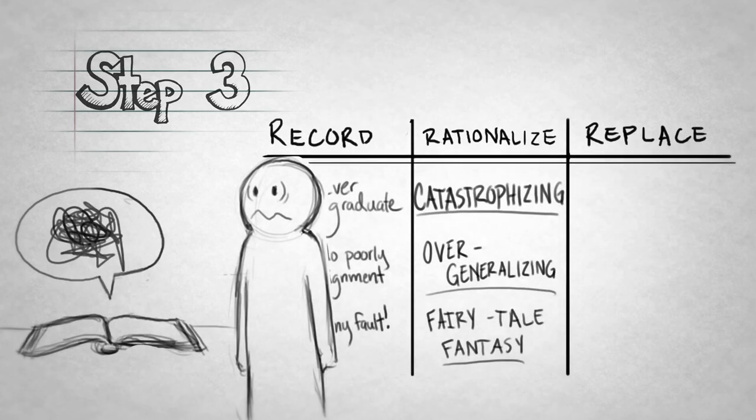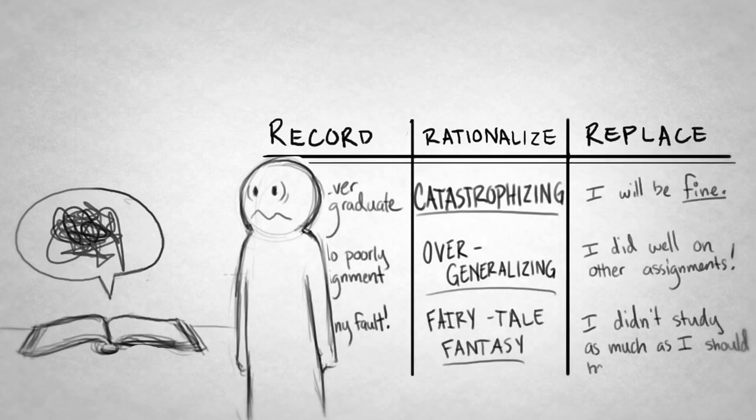Step 3. Replace. In the third column, respond to each distorted AT. Talk back. Get those negative thoughts off your chest.